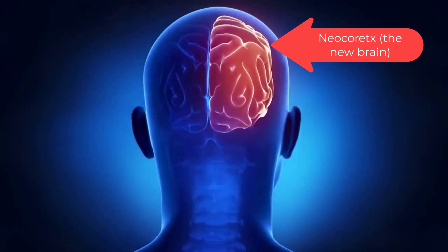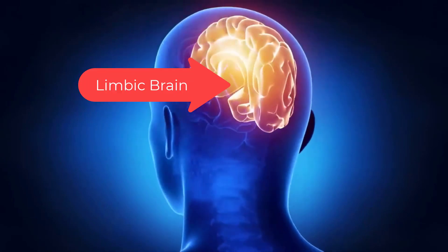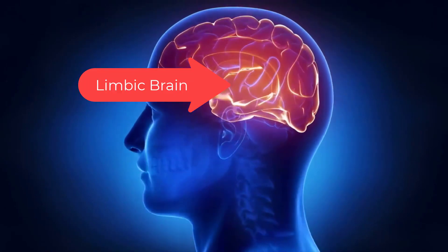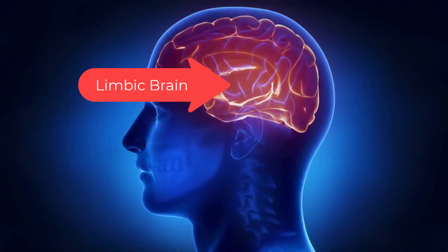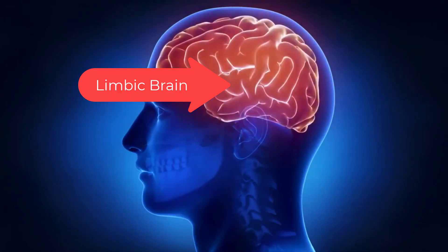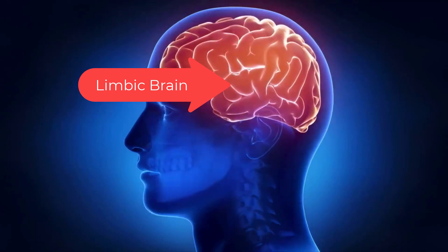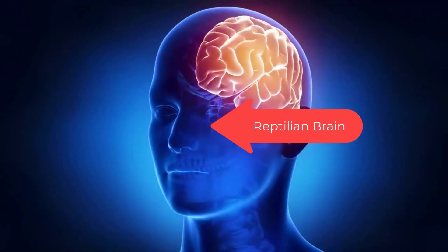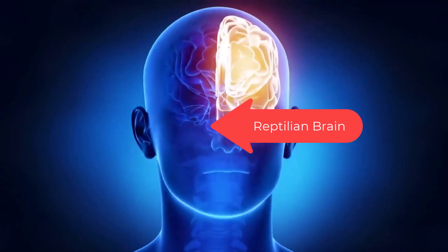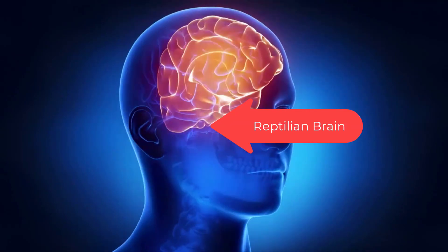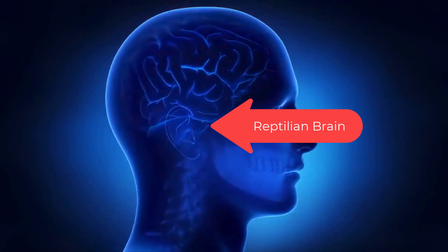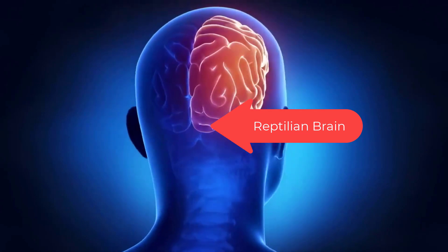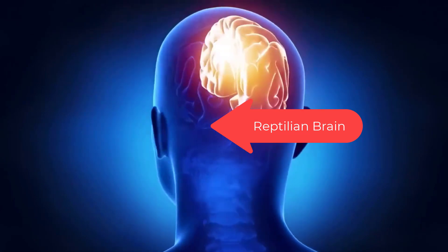The middle brain, the limbic brain, feels emotions and is our instinct for fight-or-flight response. The old brain — the reptilian brain — it decides. It can take into account input from the other brains, but it can also decide faster than blinking an eye, then use the other brains to justify the decision.